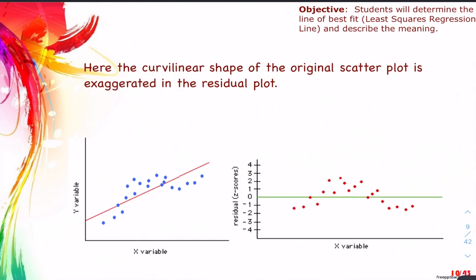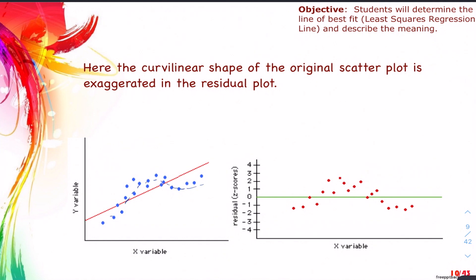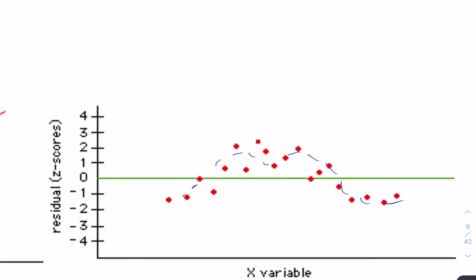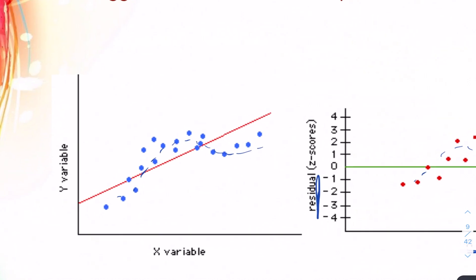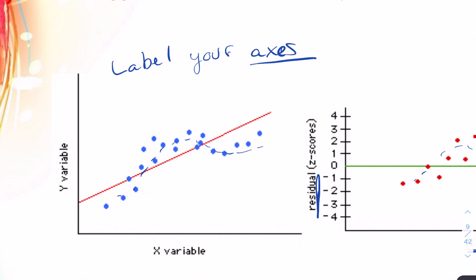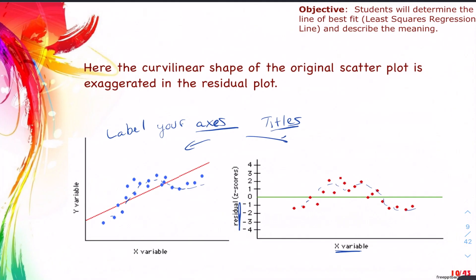What about a curvilinear shape in the scatterplot? You can see that this curvilinear goes up and then comes back down, and it's more readily apparent in the residual plot. That curvilinear we see in the original scatter is just accentuated in the residuals. Always note, when looking at these types of plots, what are you looking at? That's why it's so important to label your axes — and even better, if you give them titles, it's even clearer to your audience which plot you're discussing.